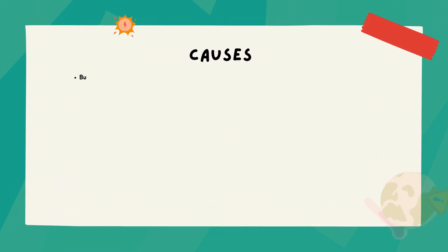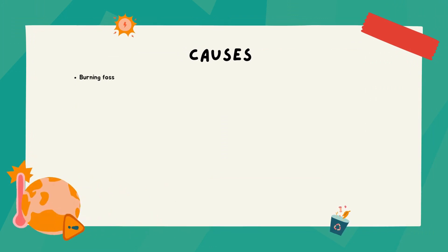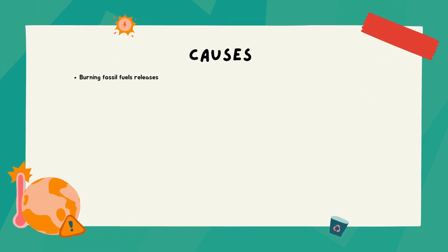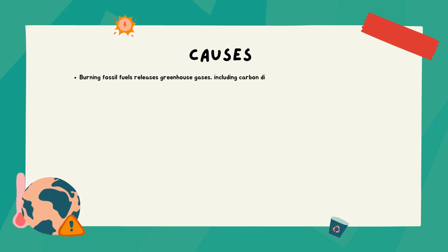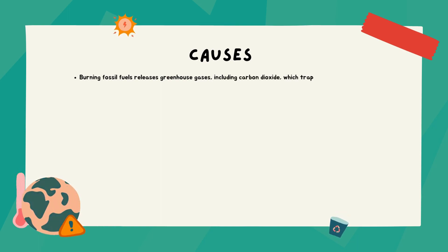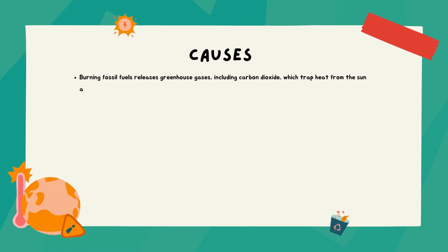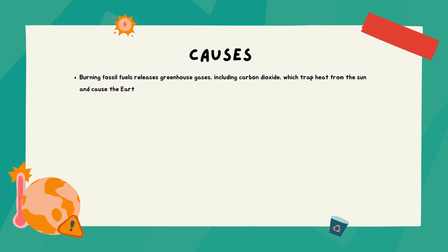Causes: burning fossil fuels releases greenhouse gases including carbon dioxide, which trap heat from the sun and cause the Earth's temperature to increase.